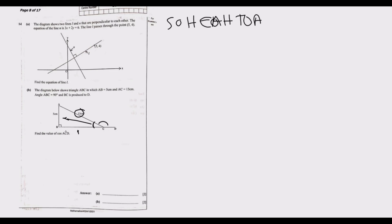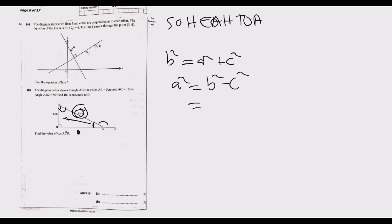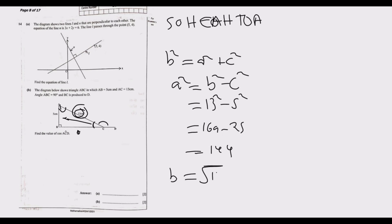To find BC, we use Pythagoras' theorem. The hypotenuse is AC = 13 cm. So BC squared equals AC squared minus AB squared: 13 squared minus 5 squared equals 169 minus 25, which equals 144. Taking the square root — distance is positive — BC equals 12 cm.